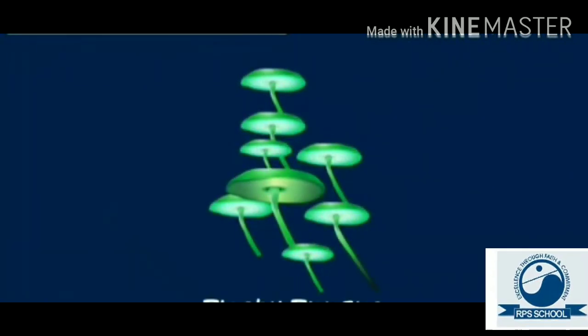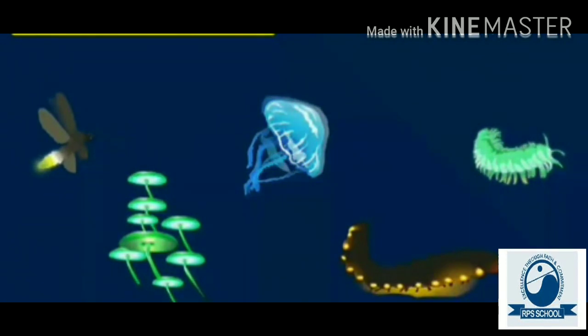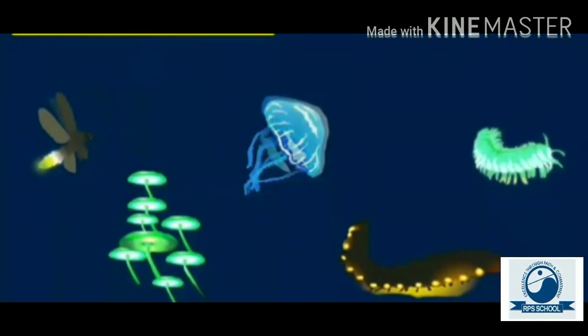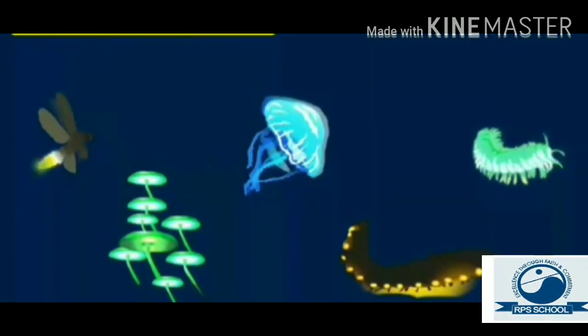Now, let us see some examples of living luminous objects. Children, fireflies, jellyfish, fleshy fungus, radiant railroad worm, glowing millipede. These all are natural luminous objects. They glow and emit light on their own.